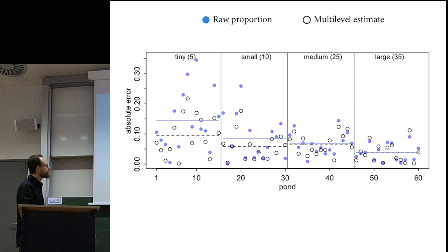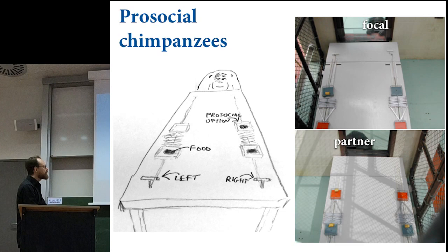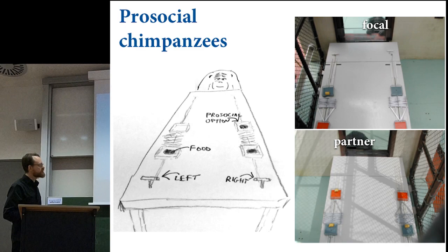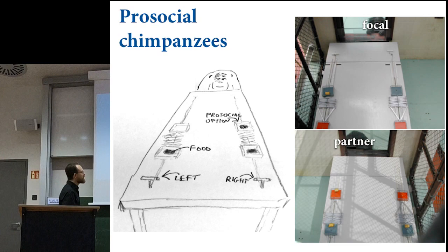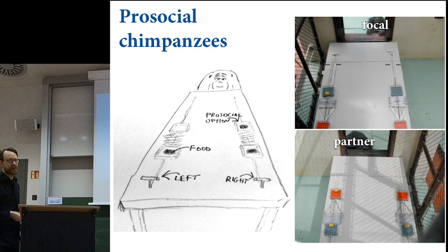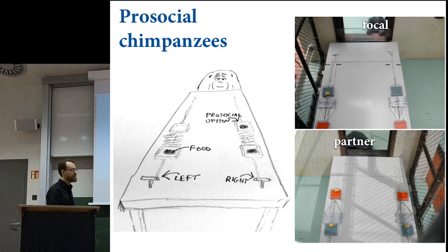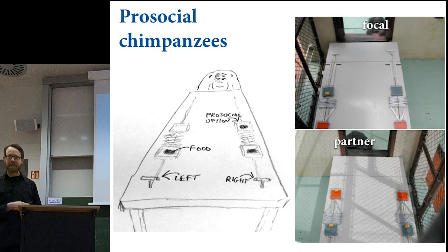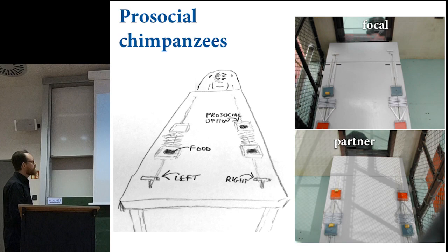Let me give you a more complicated example of a varying intercepts model. The models I just showed you have only one type of cluster—tank or pond—with an intercept for each and no predictor variables. It's routinely true that there are multiple different things you could and probably should cluster on simultaneously. This is one reason that Markov chains on the desktop are so popular now: they let you fit such models correctly. The full Bayes solution works; you just have to wait a couple minutes.